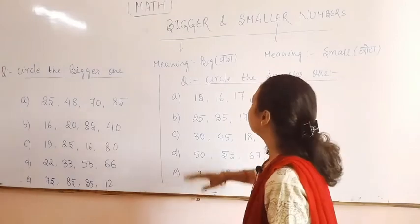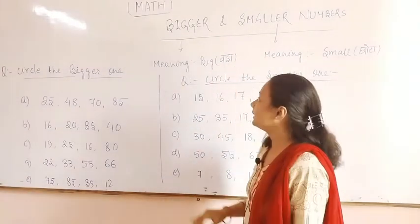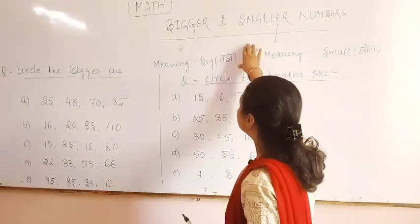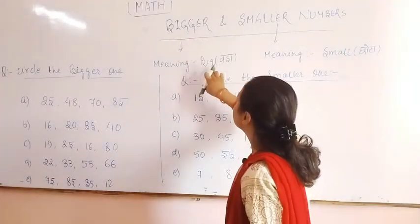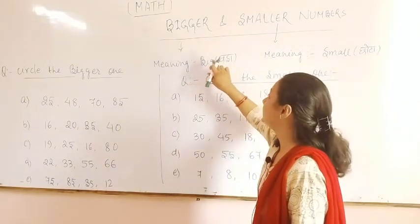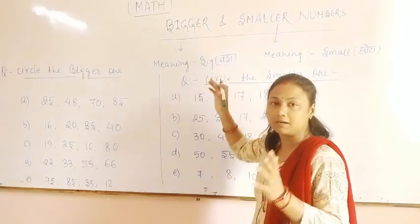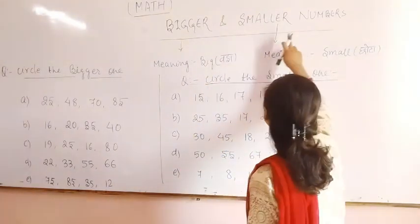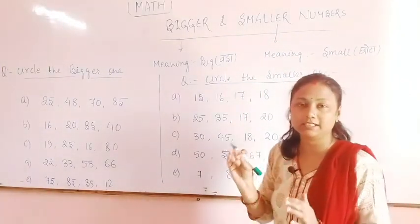I think you all understand about bigger and smaller. The general meaning of bigger is big — in Hindi, 'Bada' or large. And the meaning of smaller is small, shorter, or teeny.